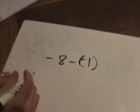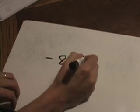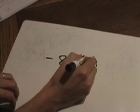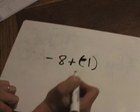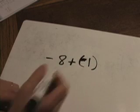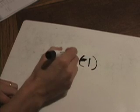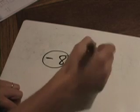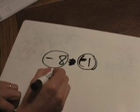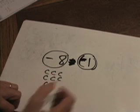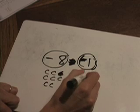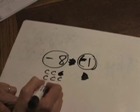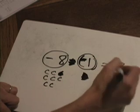Let's try another one: negative eight minus negative one. Again, the two minus symbols combine together to make a positive sign, so that's scribbled out. I circle the negative eight, giving me eight negatives — eight cats. The other symbol is gone, leaving the one as positive — one dog. The dog and one cat run off, and I'm left with seven cats. So the answer is negative seven.